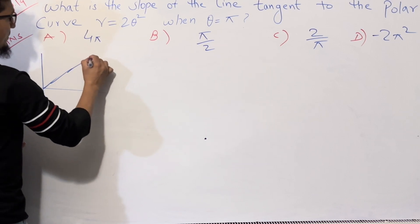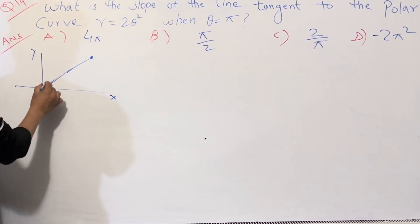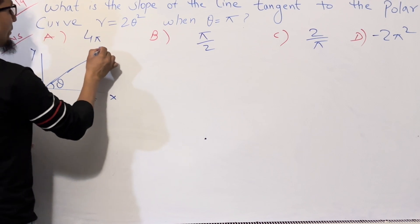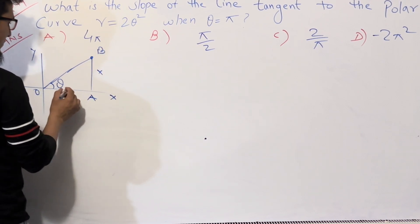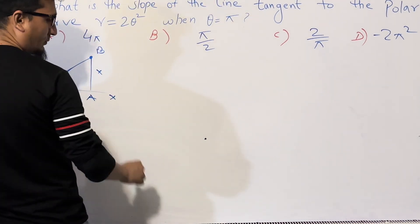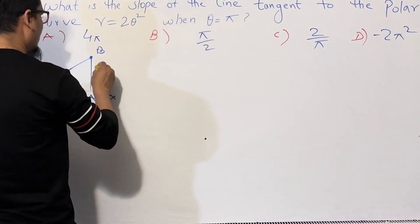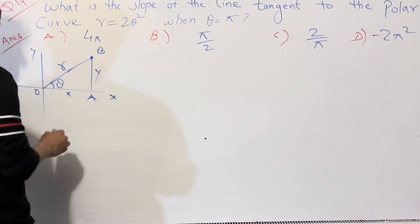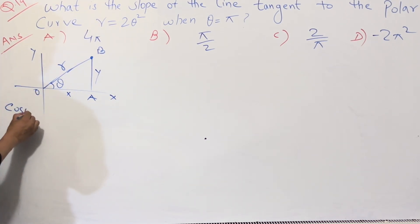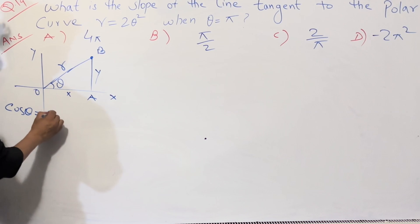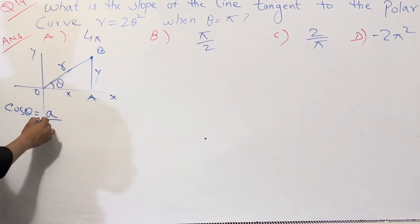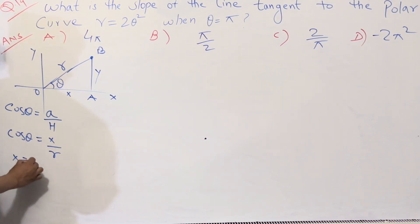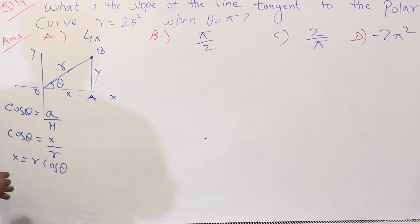Suppose your point is in the first plane with x-axis and y-axis. The angle is θ, and we draw a line: this is x, this is y, and this is r. According to this, cos θ is equal to adjacent divided by hypotenuse, which is x divided by r. So x can be written as r cos θ.